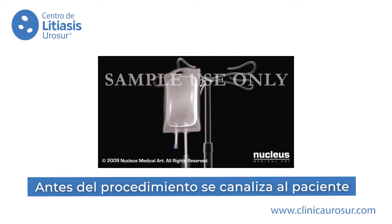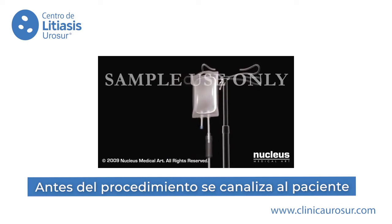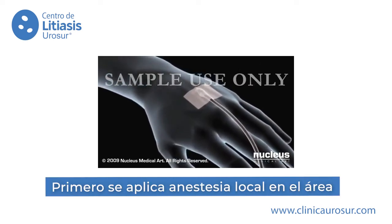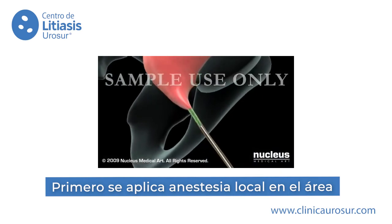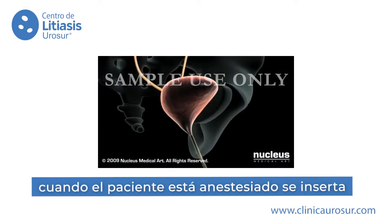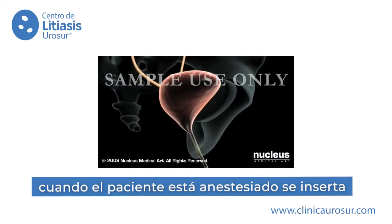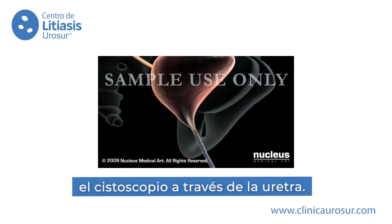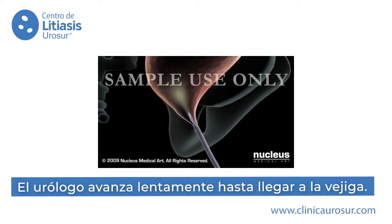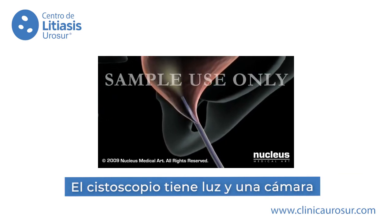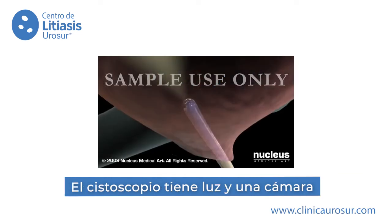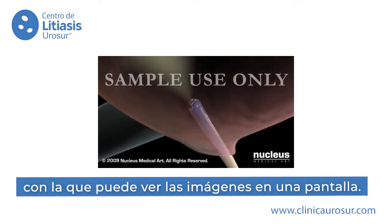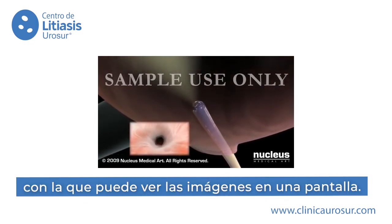Before your procedure, an IV line may be inserted into your vein to provide medication. Your doctor will begin by applying a local anesthetic to numb the area. Once the area is numbed, he or she will gently insert the tip of a cystoscope into the urethra and slowly advance it up into the bladder. The end of the cystoscope contains a light source and lenses, which project images through an eyepiece and onto a video screen.